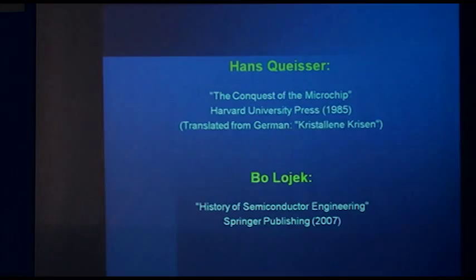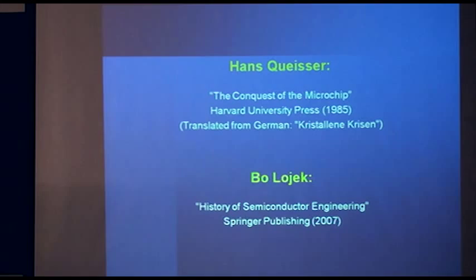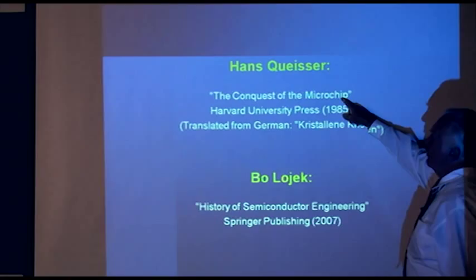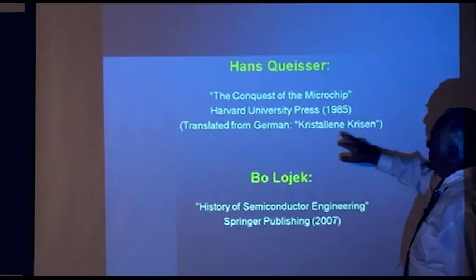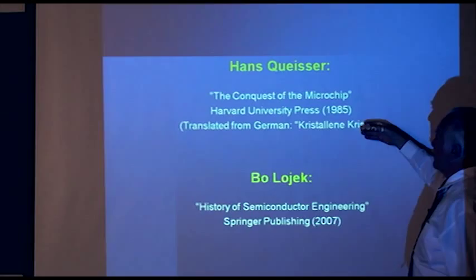So then we got to the detailed balance limit. If you want to read a little bit more, there is a very nice book by Bo Lojek, 'History of Semiconductor Engineering,' a very recent one. It's called 'The Conquest of the Microchip' — in German, 'Kristall und Krisen' — the crystal had to go through many crises to really be accepted. It is easily readable. I wrote it essentially for female trade union people, because the unions in Germany were heavily against microelectronics.